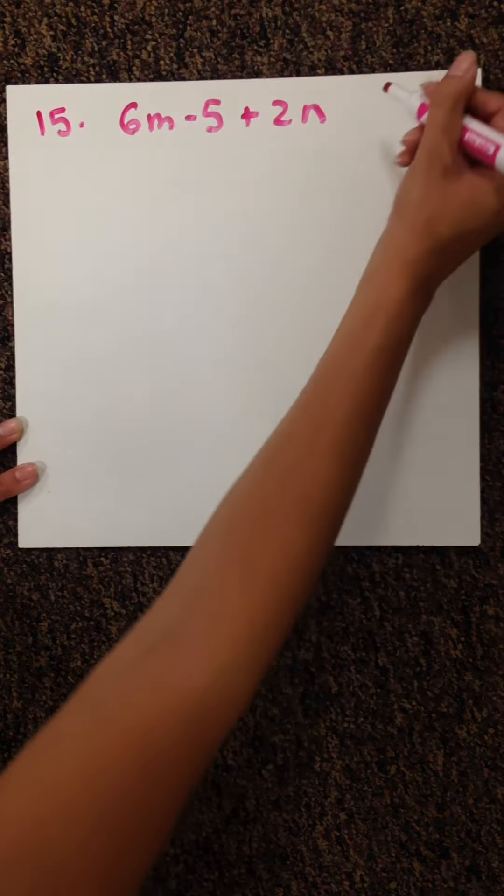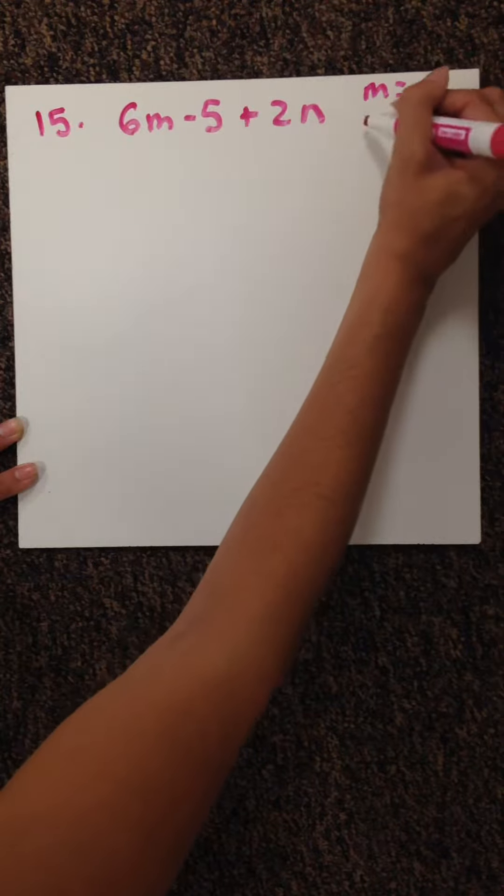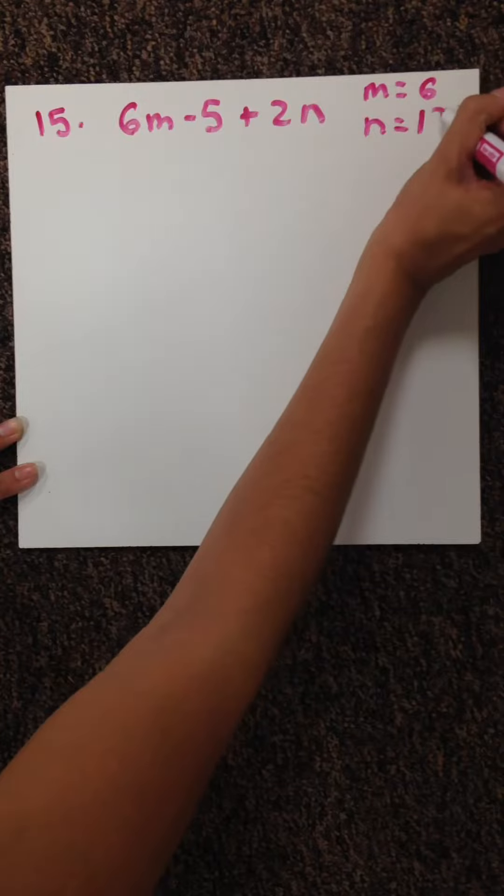You look at the beginning of this section. It says, evaluate the expression when m equals 6 and n equals 12. So we know that m equals 6 and n equals 12. Now we need to plug those numbers in.